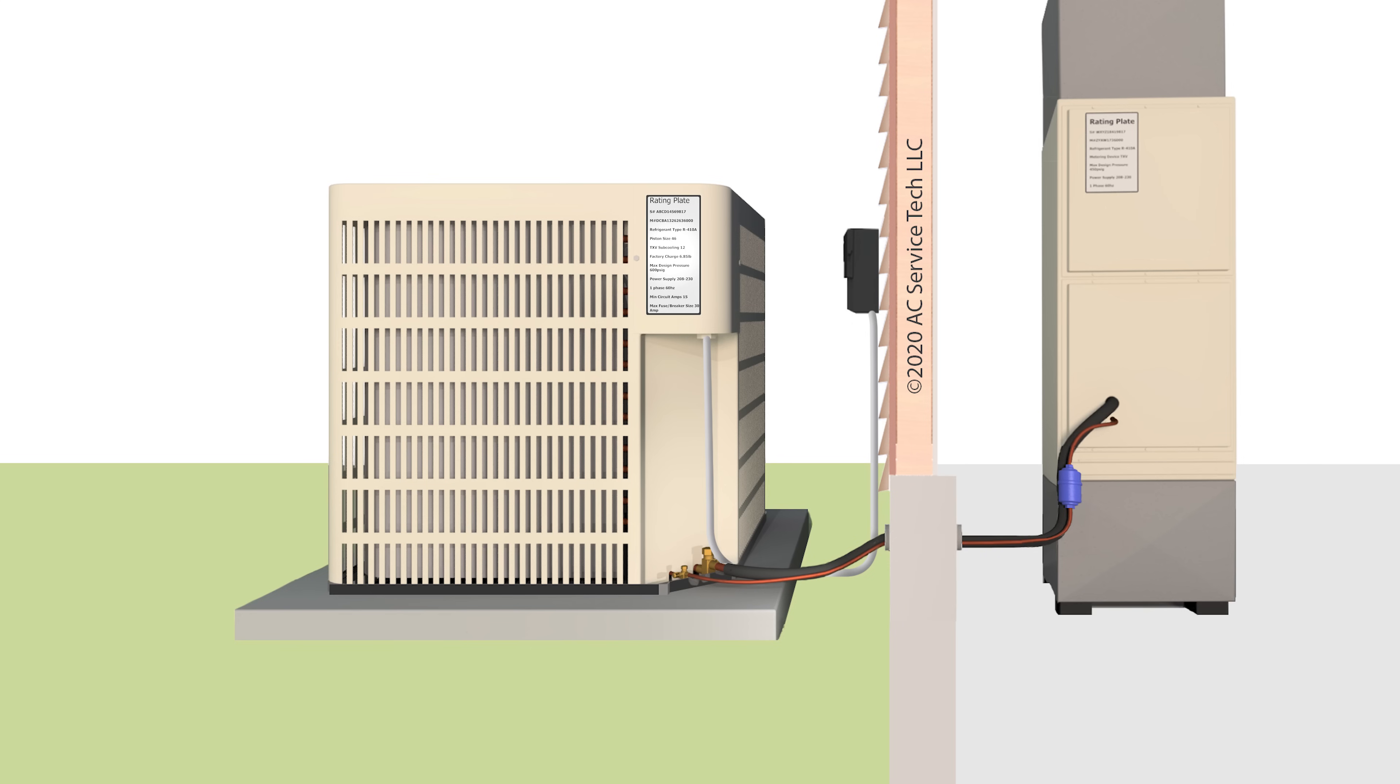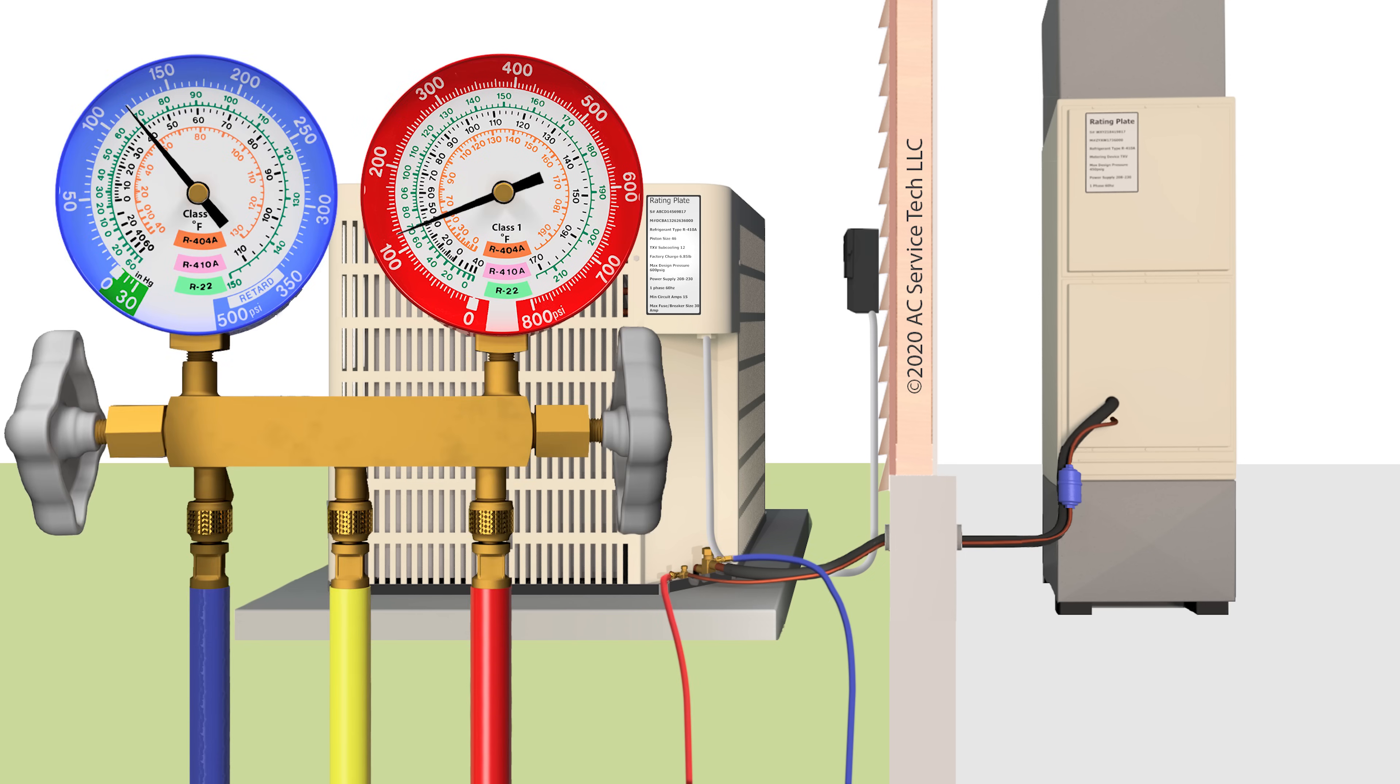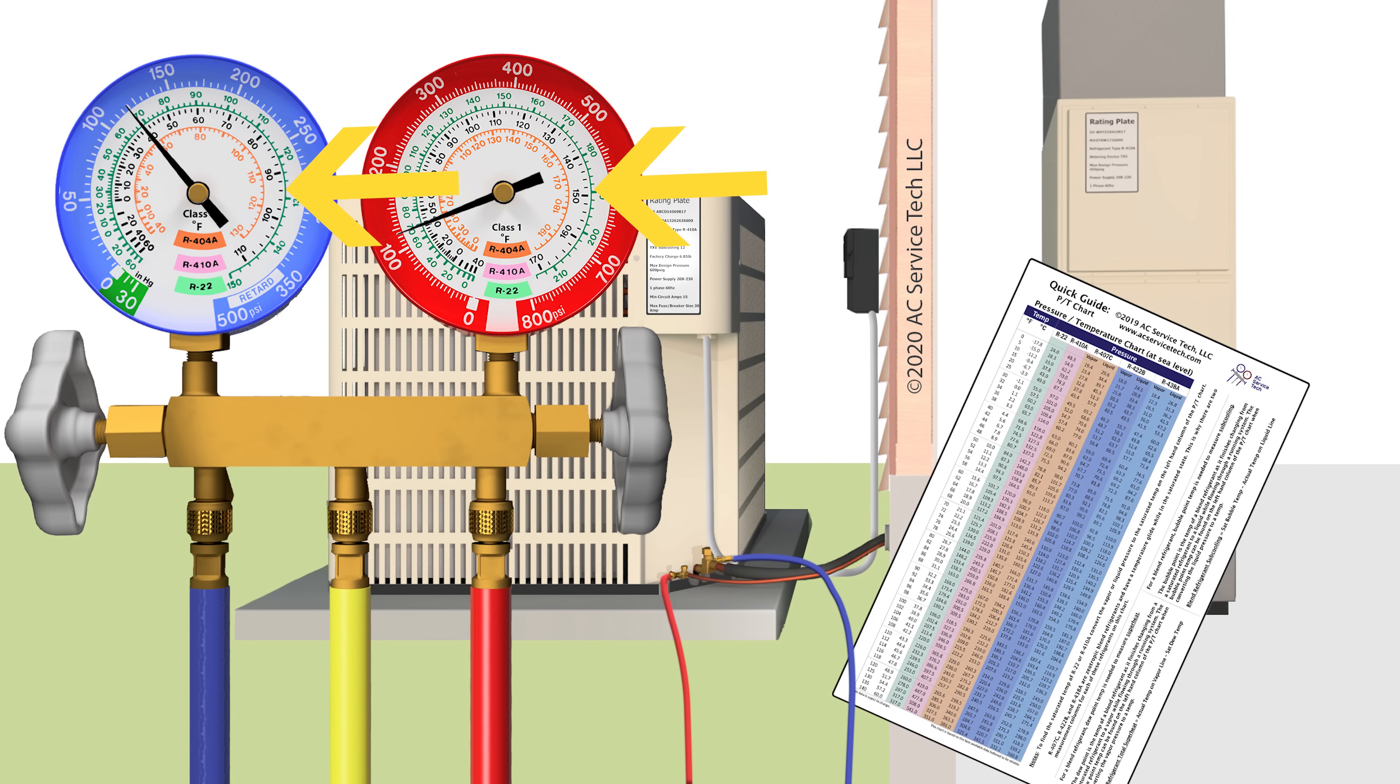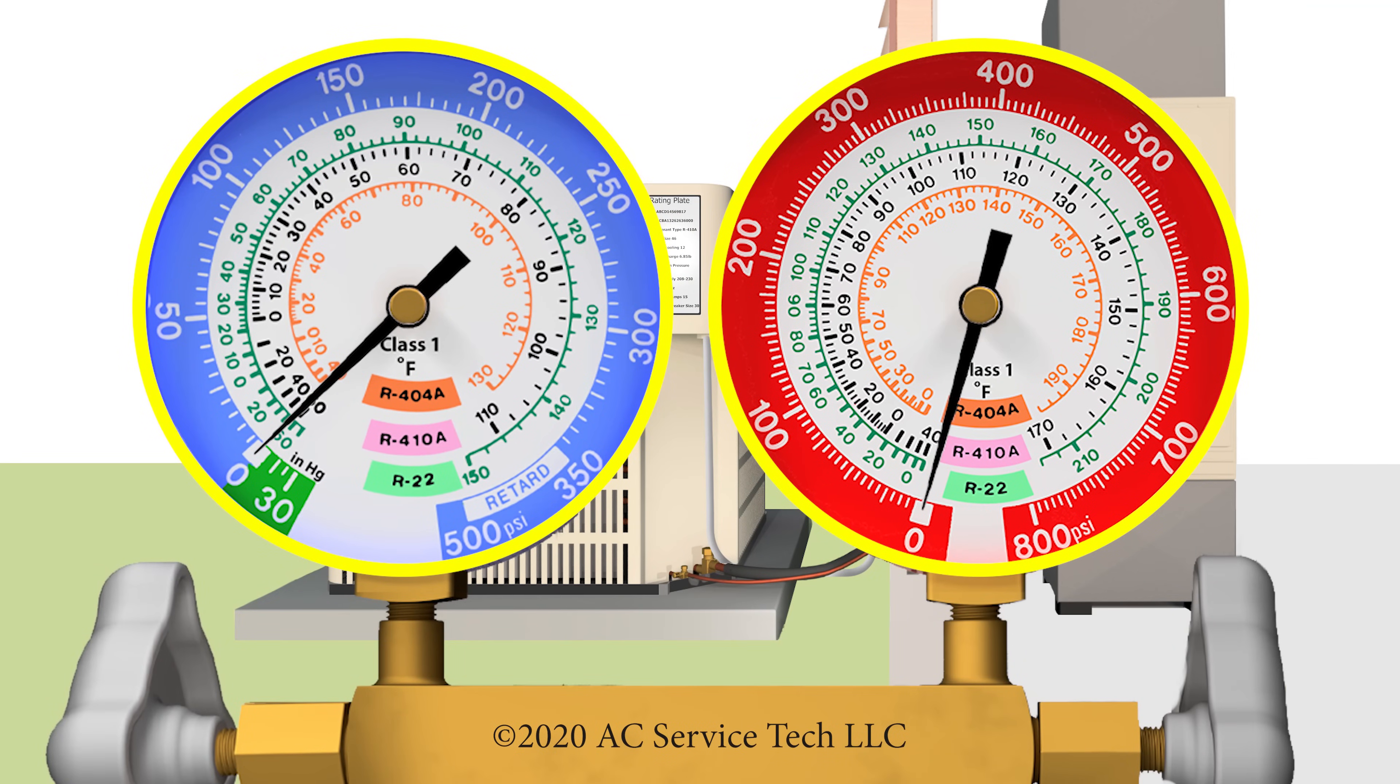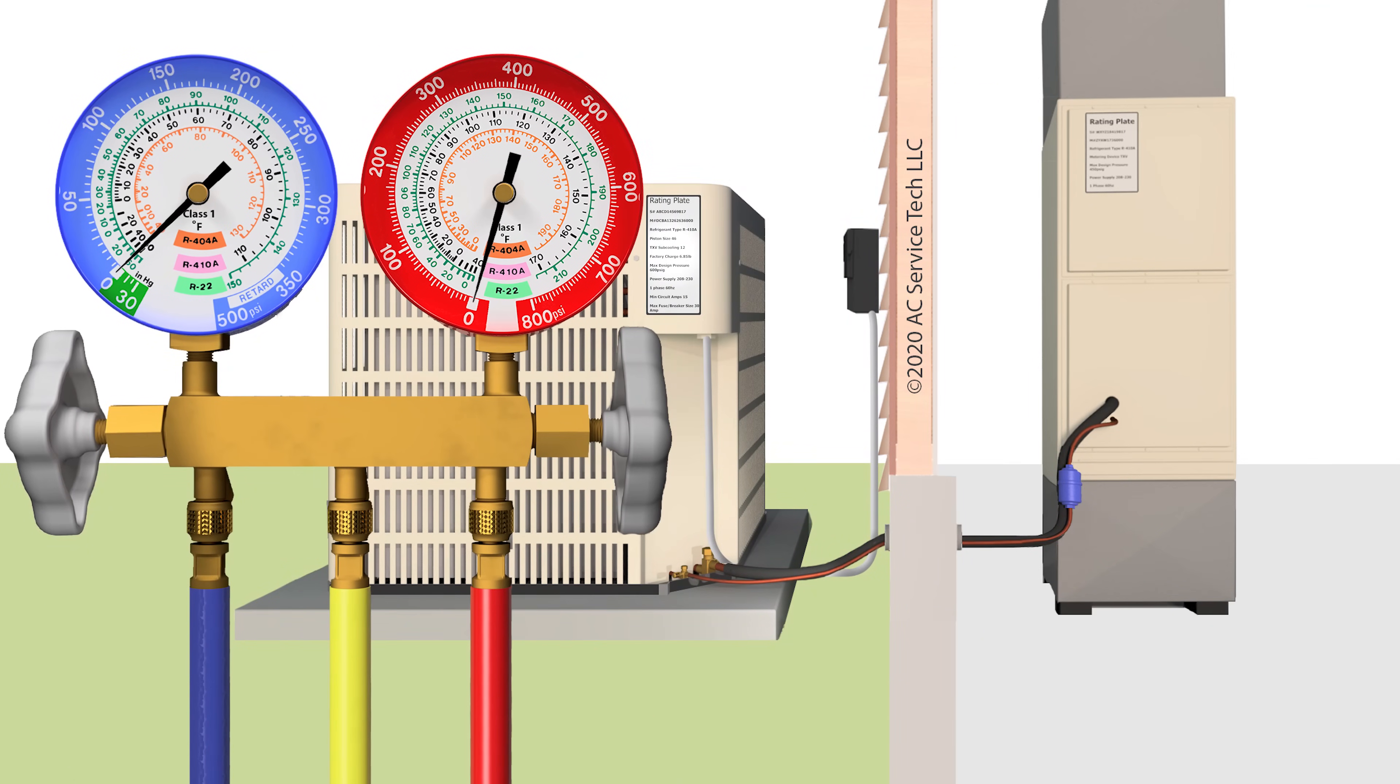If you walk up to a system and the system is off, you can check the refrigerant charge right then and there before you turn the system on by using your saturated temperatures in the PT chart. On our gauge faces, in this example, we have a PT chart overlaid already, and we see that the outdoor temperature is 70 degrees.